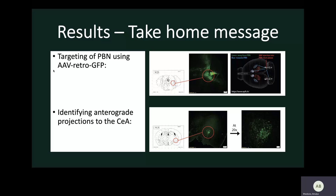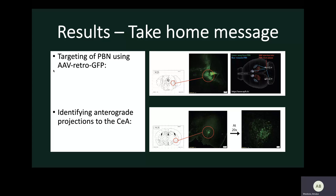We identified anterograde projections away from the PBN in the CEA, and these are indicated by the axon tracks we see in this 20X image. What's interesting is that we should see both anterograde and retrograde projections in the CEA, but we only see anterograde, which raises some interesting questions as to why this has occurred.